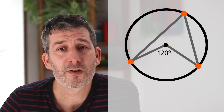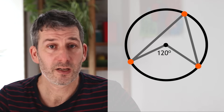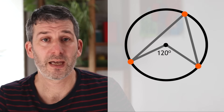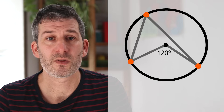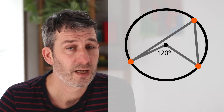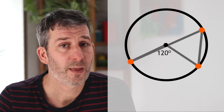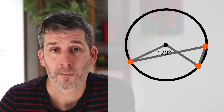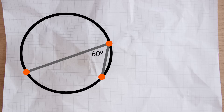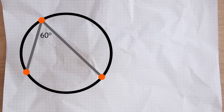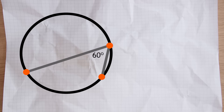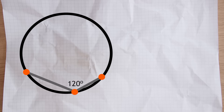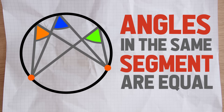The second theorem follows on from the first one. It doesn't matter where that angle on the circumference is - it will always be half of the angle at the centre. You can see as you move the point around the circumference the angle at the centre isn't changing, and therefore the angle at the circumference isn't changing either. Just for clarity, without showing the angle at the centre, you can see the angle at the circumference never changes - as long as it stays in the same segment, in other words on the same side of those two points. As soon as you move that angle down into the other segment it changes. We say angles subtended by an arc in the same segment are equal, or more simply angles in the same segment are equal.